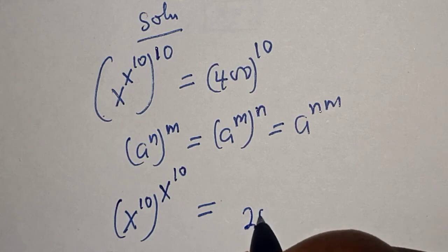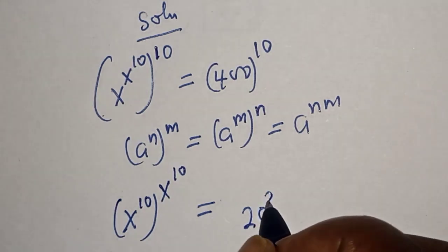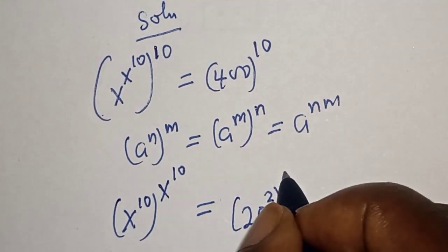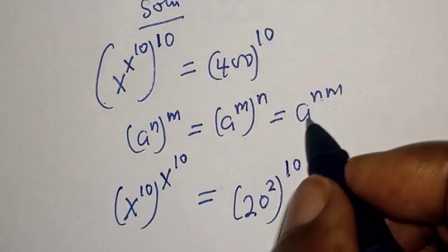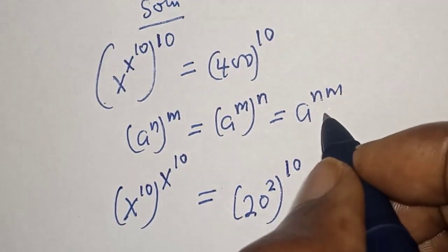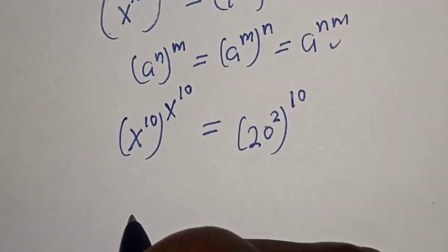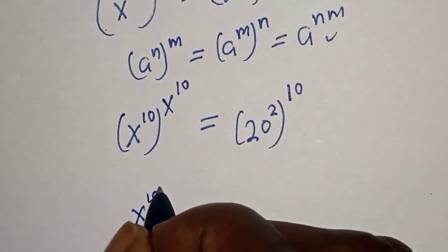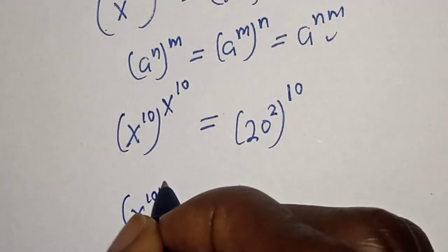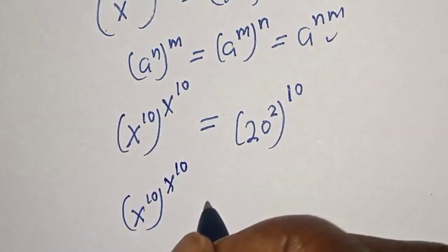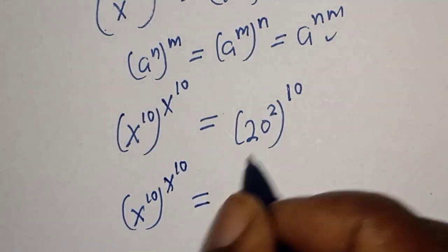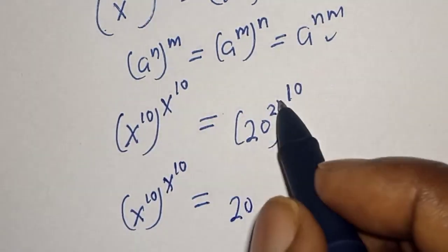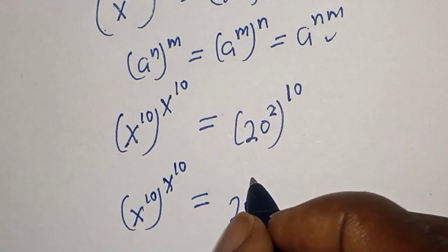Now 400 can be written as 20 squared, so 400 raised to power 10 equals 20 squared raised to power 10, which equals 20 raised to power 10 times 2, that is 20 raised to power 20.